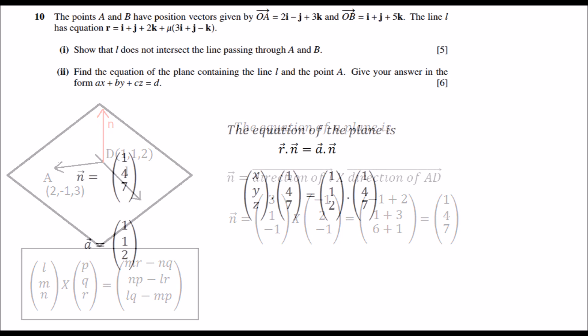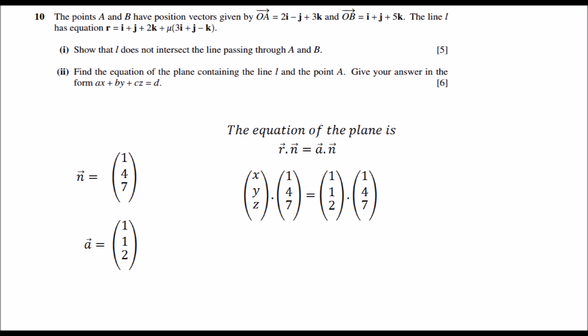All right, now let's substitute these values in the equation of the plane. So r dot n equals a dot n. R is XYZ, n is (1, 4, 7), and a is a position vector of a point on the line. Well, (1, 1, 2) lies on the line, so I used the position vector of that point.